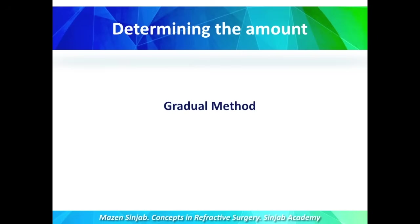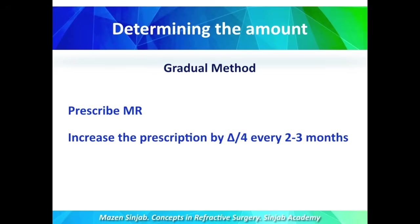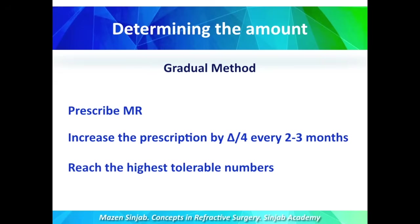In the gradual method, I prescribe the manifest refraction as a first step. Then I increase the prescription by a quarter of delta every two to three months, until I reach the highest tolerable numbers.